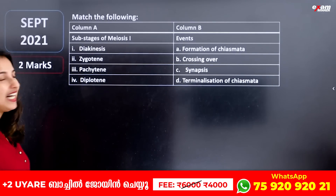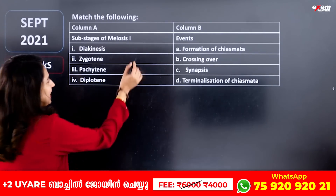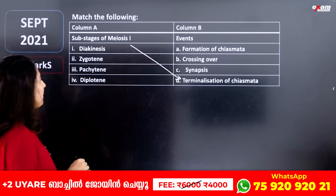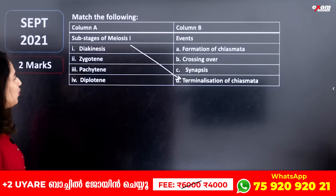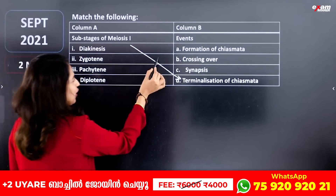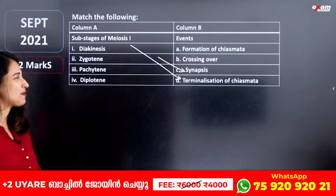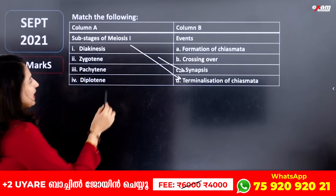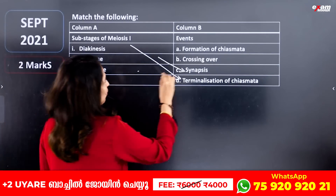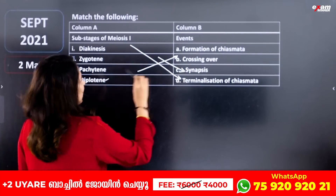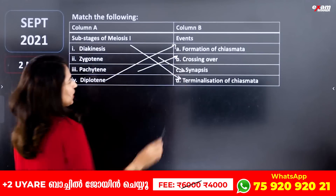In Prophase I of Meiosis, the substages are: Diakinesis is the last stage, with terminalization of chiasmata. Zygotene is the pairing of homologous chromosomes, called synapsis. Pachytene involves crossing over and formation of chiasmata. Diplotene follows after that.